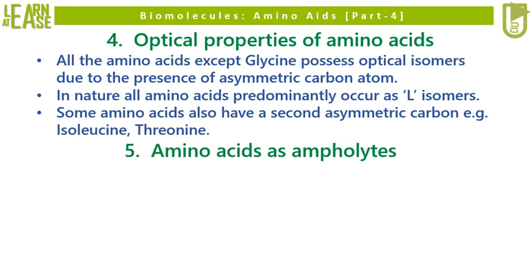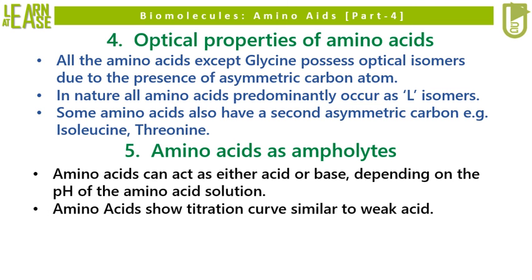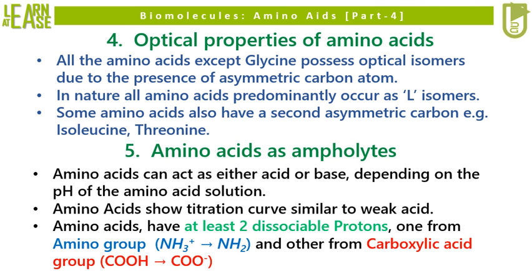I will now describe the fifth and last property: description of amino acids as ampholytes. Amino acids can act as either acid or base depending on the pH of the amino acid solution. Amino acids show titration curves similar to weak acids, and have at least two dissociable protons — one from the amino group, where NH3+ can donate a proton and get converted to NH2, and another from the carboxylic acid group, where COOH can donate a proton and get converted to COO−.